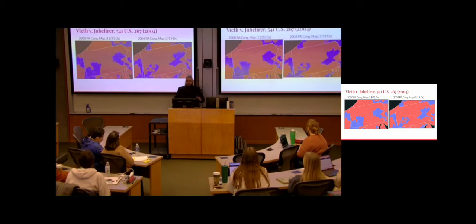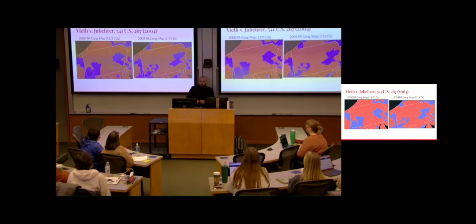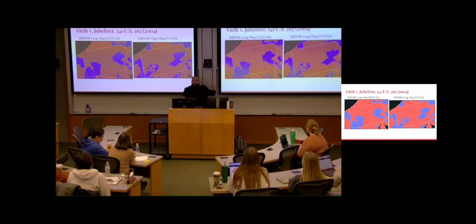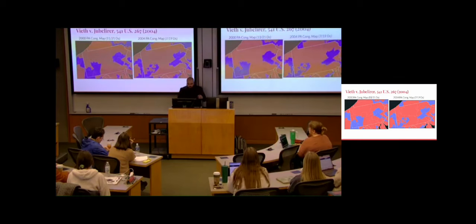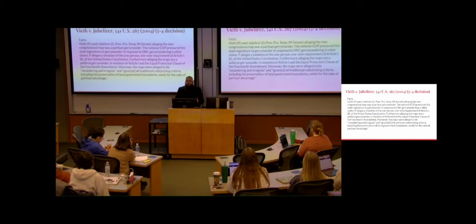The first case I'm going to talk about is Vieth v. Jubelirer. The case hinges on the map on the 2004 side. The 2000 map in Pennsylvania had 11 out of 22 Democrats — pretty reflective of the state. On the 2004 map, you have 7 out of 19 Democrats, which is not reflective of the state. Vieth was a registered Democrat in Pennsylvania who brought suit against Jubelirer, believing these maps were gerrymandered. He sued and got all the way up to the United States Supreme Court. This decision is 5-4.